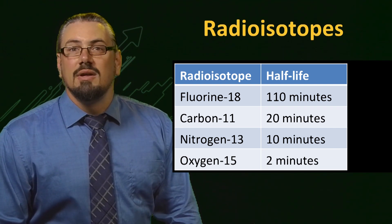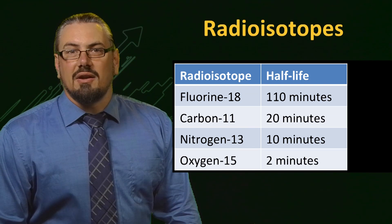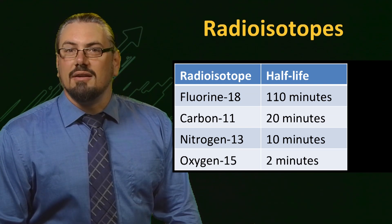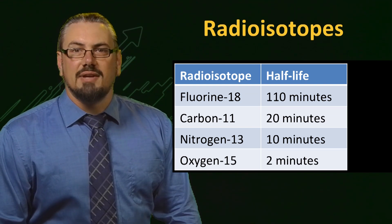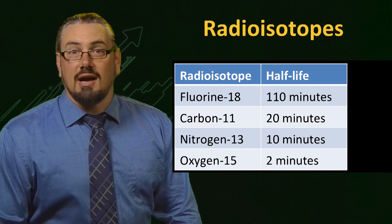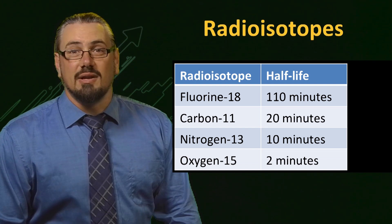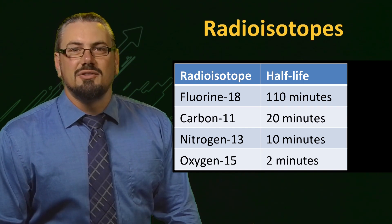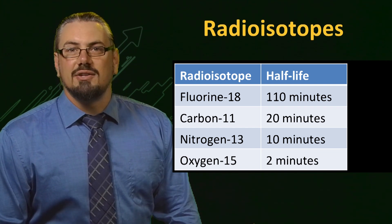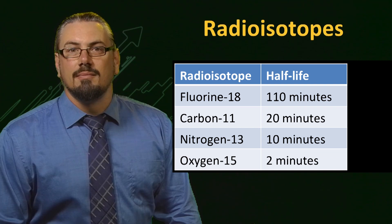As an example, you can see that Oxygen-15, generally used for blood flow studies, has a half-life of only 2 minutes. As you can imagine, that's a real constraint for any studies using that radioisotope.